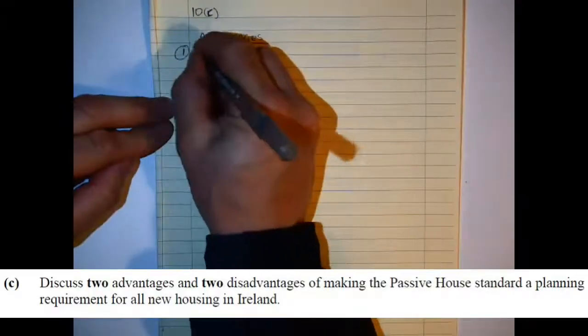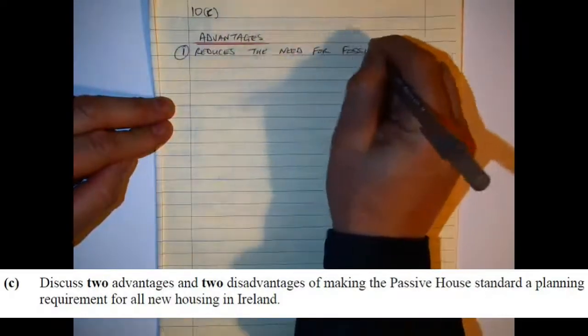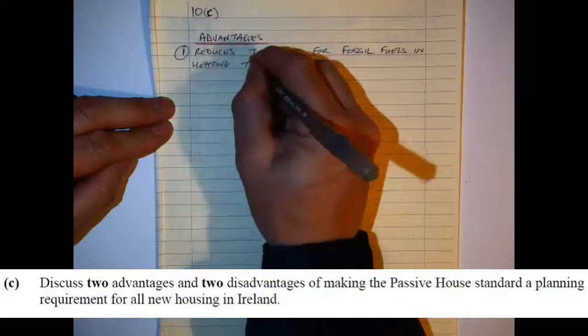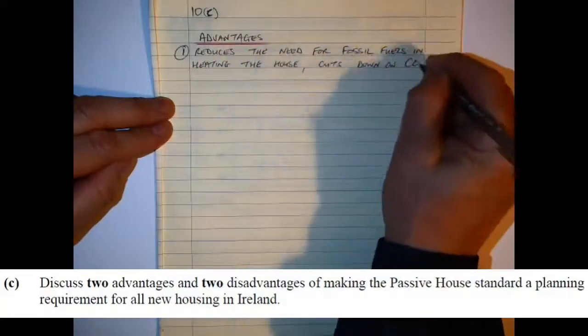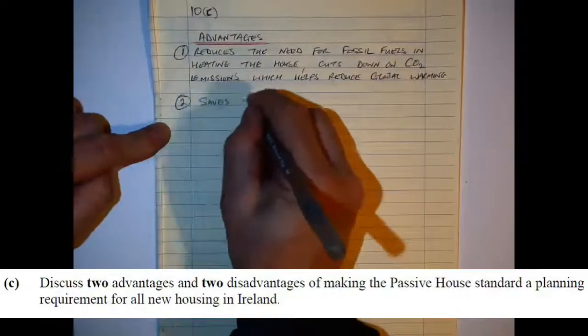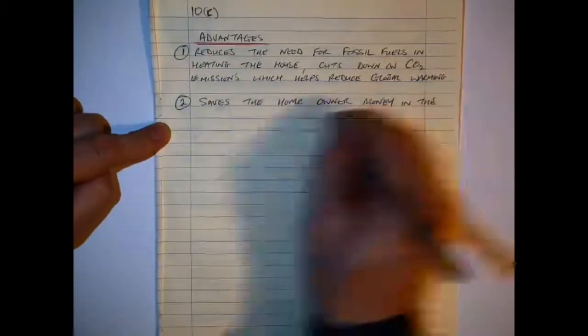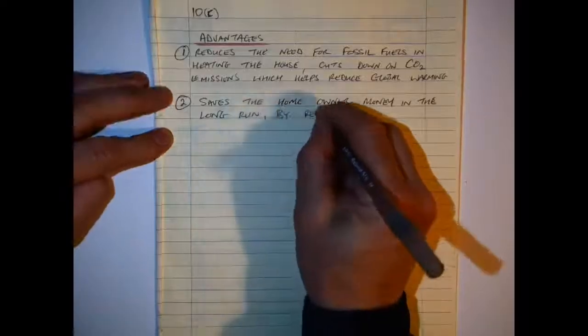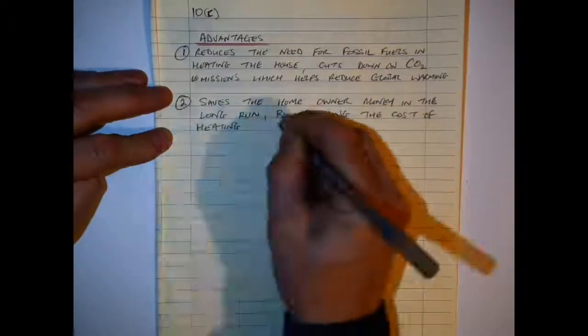Other things could be offered like a brise soleil and things like that there, but these are quite easy to show in a sketch. And we are on to the last part of the question here. There are two advantages and two disadvantages. So like I said in some of these other questions, if you can mirror what they are actually asking you, it makes it easier for the examiner to mark as well.